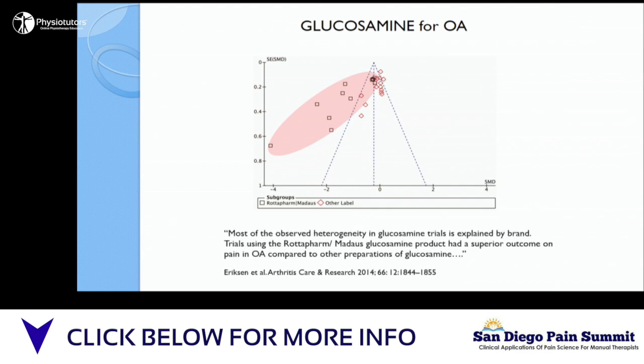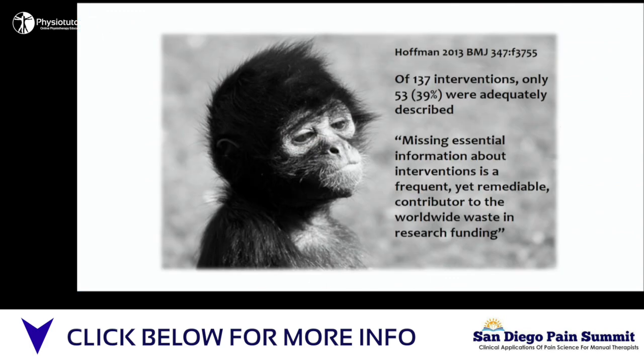This systematic review said that most of the heterogeneity in glucosamine trials is explained by brand. Trials using the Rotter Farm product have a superior outcome. But that systematically fails to acknowledge that we can explain that, because small studies that don't show an effect aren't getting published. This average here is derived from all these trials. So if we threw in three or four on the other side of the funnel, how effective do you think glucosamine would be compared to placebo? Not at all. So publication bias is something to be aware of.